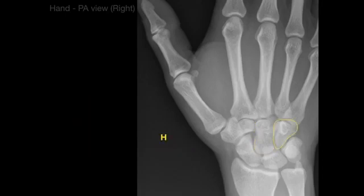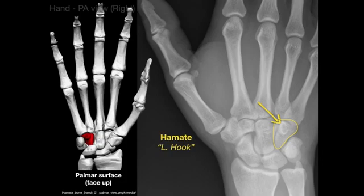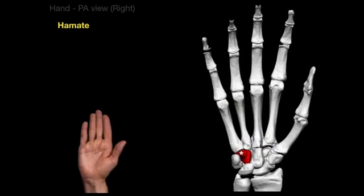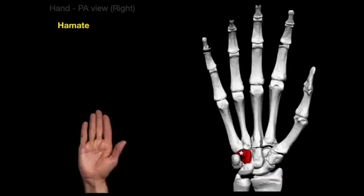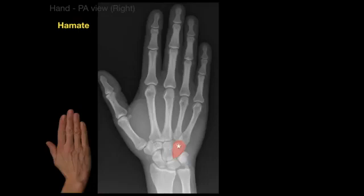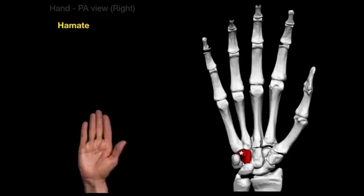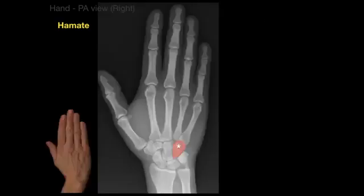The next bone is the hamate, which is Latin for hook, because that little structure there is called the hamulus, or hook, of the hamate. Looking at the palmar surface where the hand is face up, there is that hook. On x-ray, which shows the back surface of the hand face down, the asterisk is showing the hamulus of the hamate. Toggling between the palm surface and the back surface gives you an idea of where the hamulus of the hamate is on x-ray.